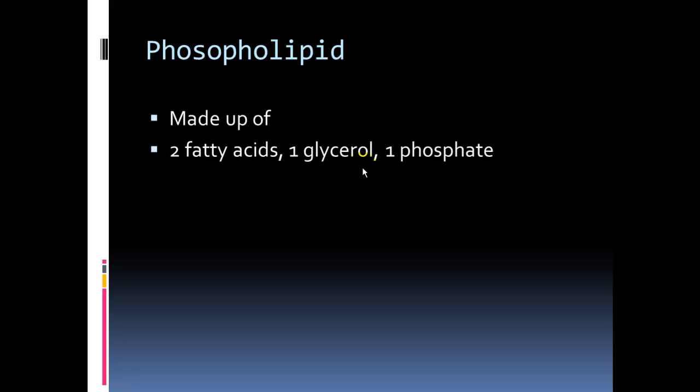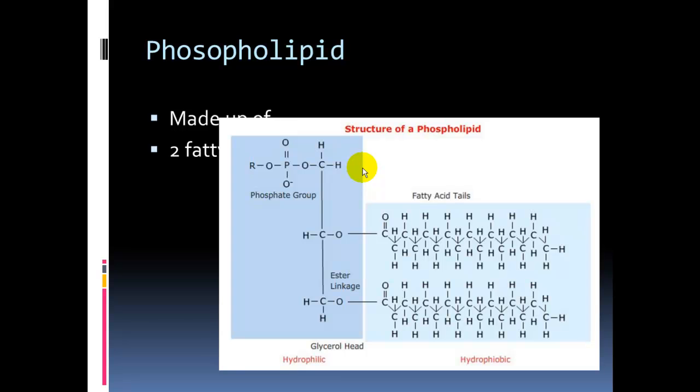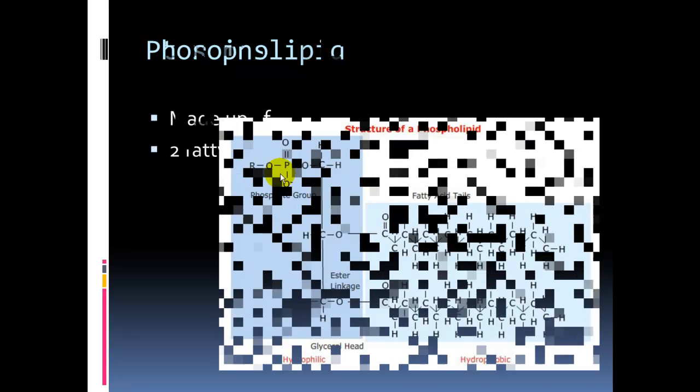So, again, a phospholipid, what is it made of? Two fatty acids, not three, like our triglycerides. One of them has been removed and replaced with a phosphate group. Still the glycerol backbone. So, last look at that molecule right there, looking at the phosphate. Again, associating the phosphate with the name phospholipid.